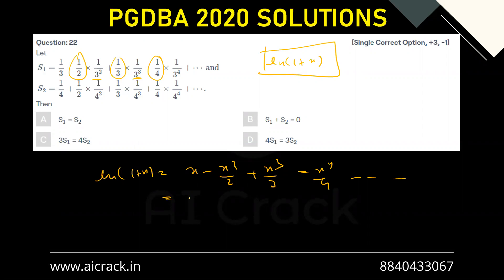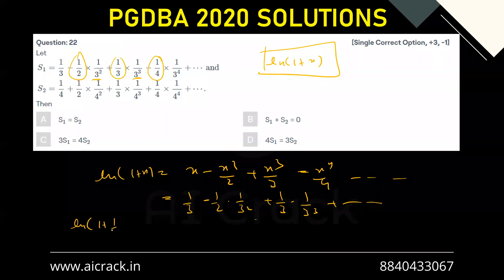That would give me 1/3 - 1/2 · (1/3)² + 1/3 · (1/3)³ and so on. This becomes exactly this series, so this series is nothing but ln(1 + 1/3). Now let us talk about the second series.